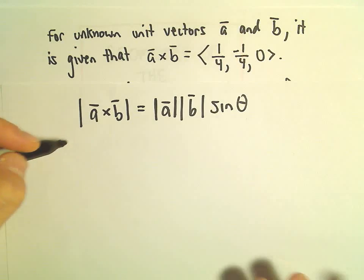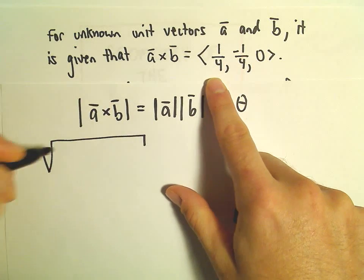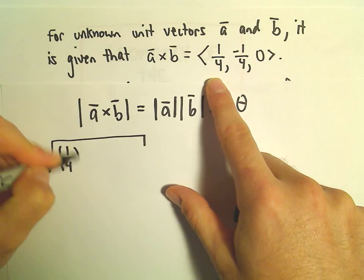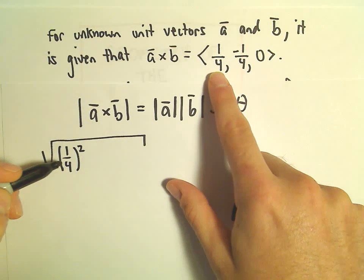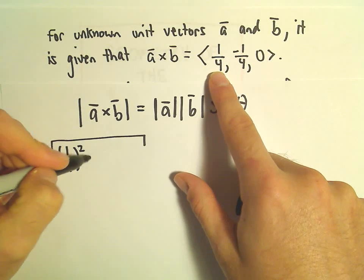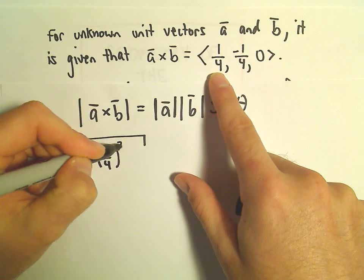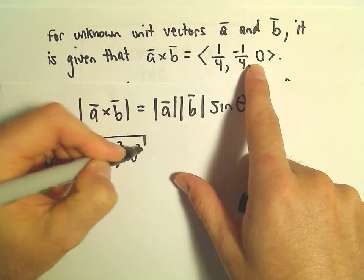We can compute a cross b by just finding the magnitude. So we'll square the components: one-fourth squared plus negative one-fourth squared, and then we would have zero squared.